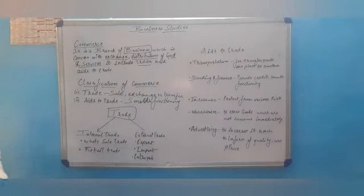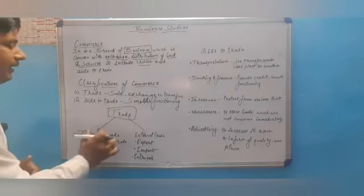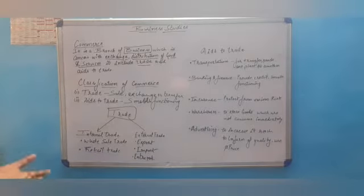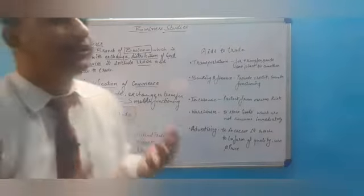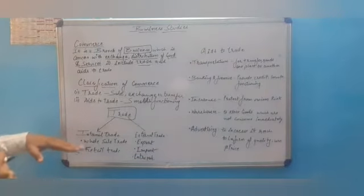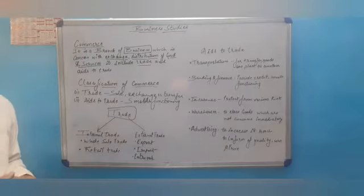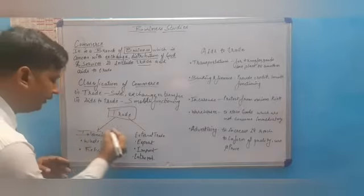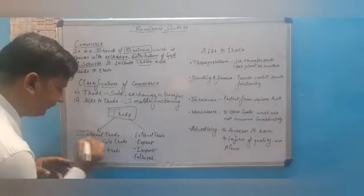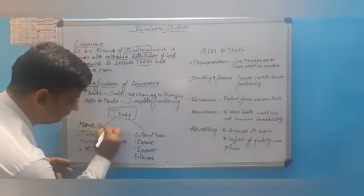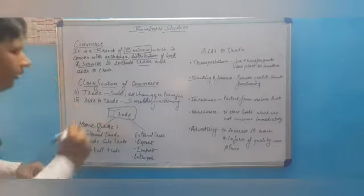Trade is further divided into two parts: the first one is internal trade and the second one is external trade. Internal trade refers to buying and selling of goods and services within the geographical boundaries. It is also known as home trade.